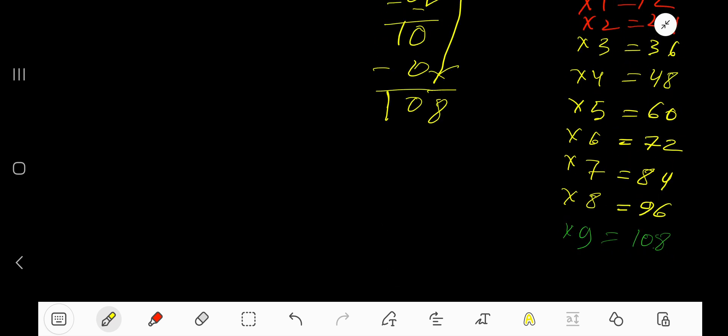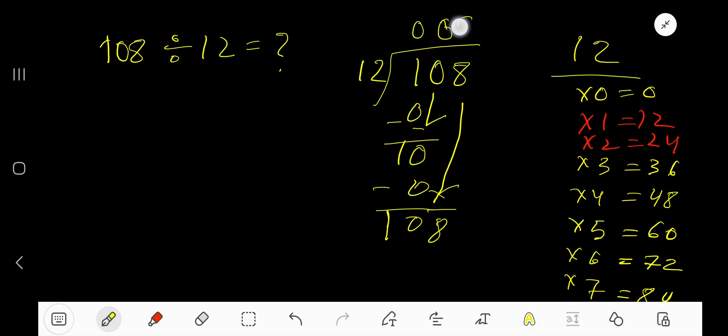So 108, 9 times. Let's guess 9. 9 times 12 equals 108. Let me check: multiply 9 times 2 is 18, write 8, carry 1 to the next column. 9 times 1 is 9, plus 1 is 10. So 9 times 12 is 108.